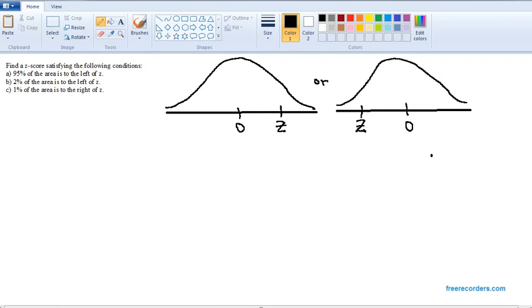We are being asked to find a z-score that satisfies the condition in Part A that 95% of the area is to the left of z. The first thing you have to do in one of these reverse normal problems is figure out whether z is to the right of zero or to the left of zero, meaning whether z is positive or z is negative.